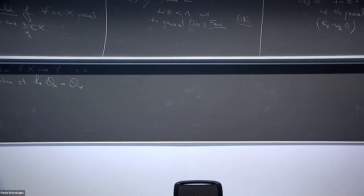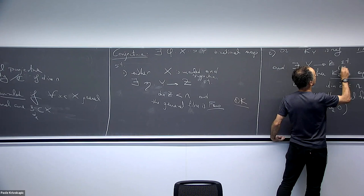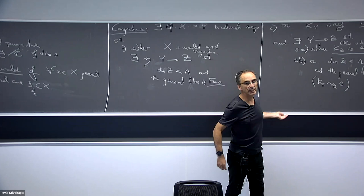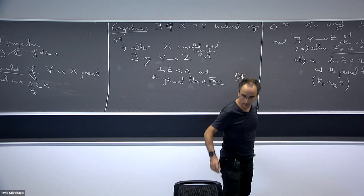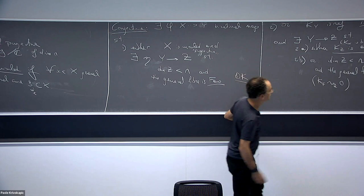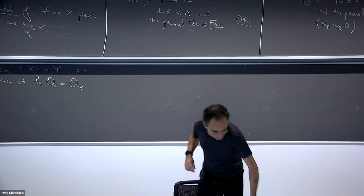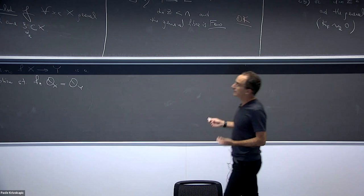For instance, if you take P² blown up at one point, you have a pencil defining a fibration to P¹, but P² itself does not have interesting fibrations. So fibrations are not nice from a birational geometry point of view. What we do like are foliations.